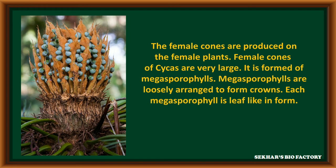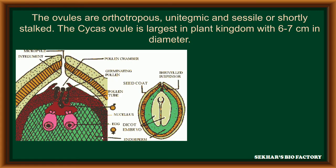The female cones are produced on the female plant. The female cone of Cycas is very large and formed with the help of many megasporophylls. These megasporophylls are loosely arranged in the form of a crown, and each megasporophyll is a leaf-like structure that contains megasporangiums or ovules. The ovule of Cycas is orthotropous and unitegmic without a stalk, called sessile, though sometimes a short stalk may be present. The Cycas ovule is the largest in the plant kingdom, having 6 to 7 cm in diameter.